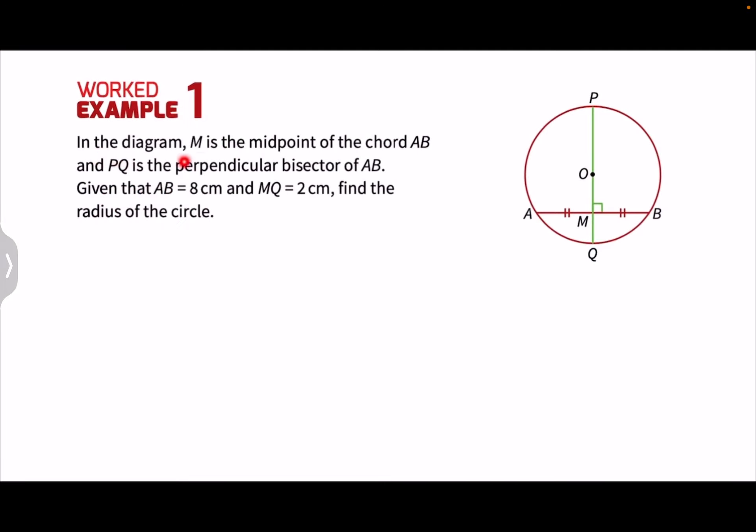In the diagram, M is the midpoint of the chord AB and BQ is the perpendicular bisector of AB. Given that AB equals 8cm and MQ equals 2cm, find the radius of the circle.